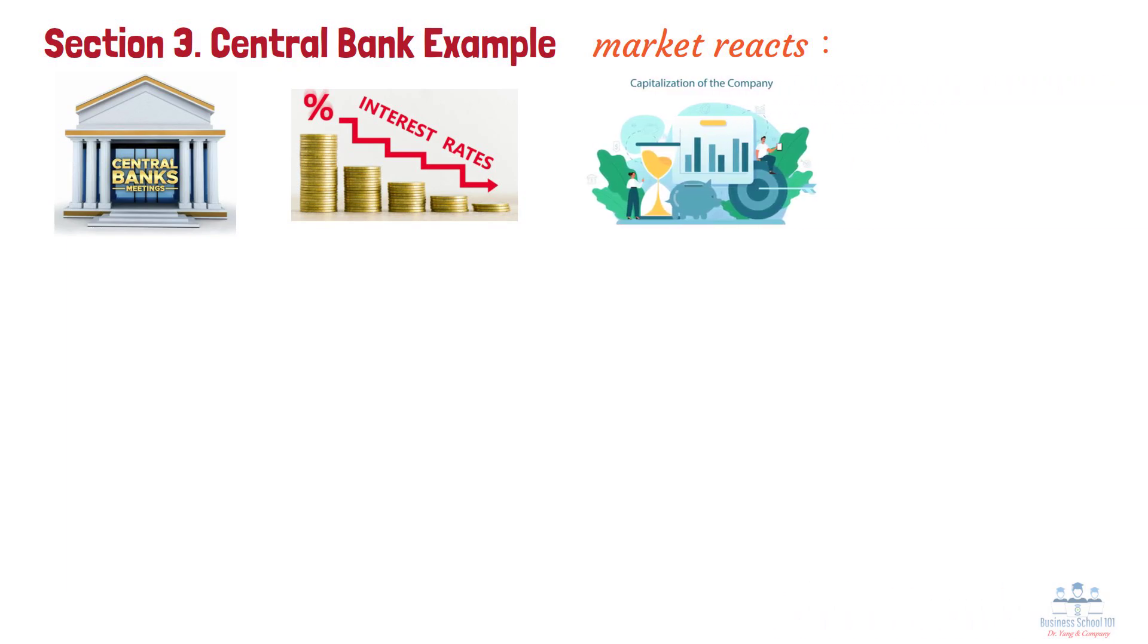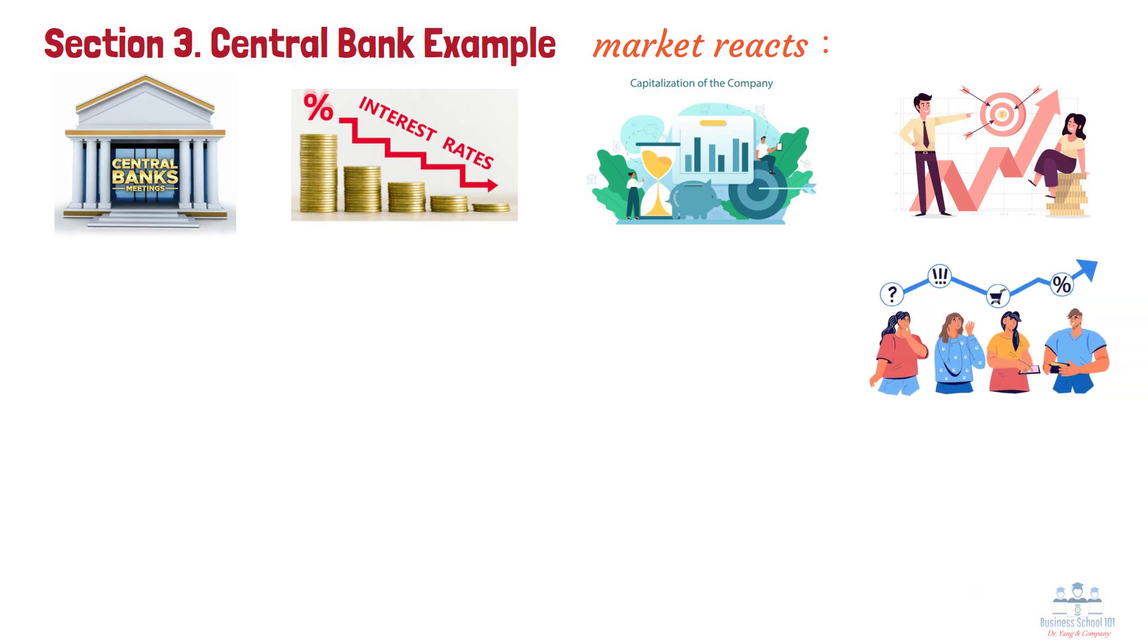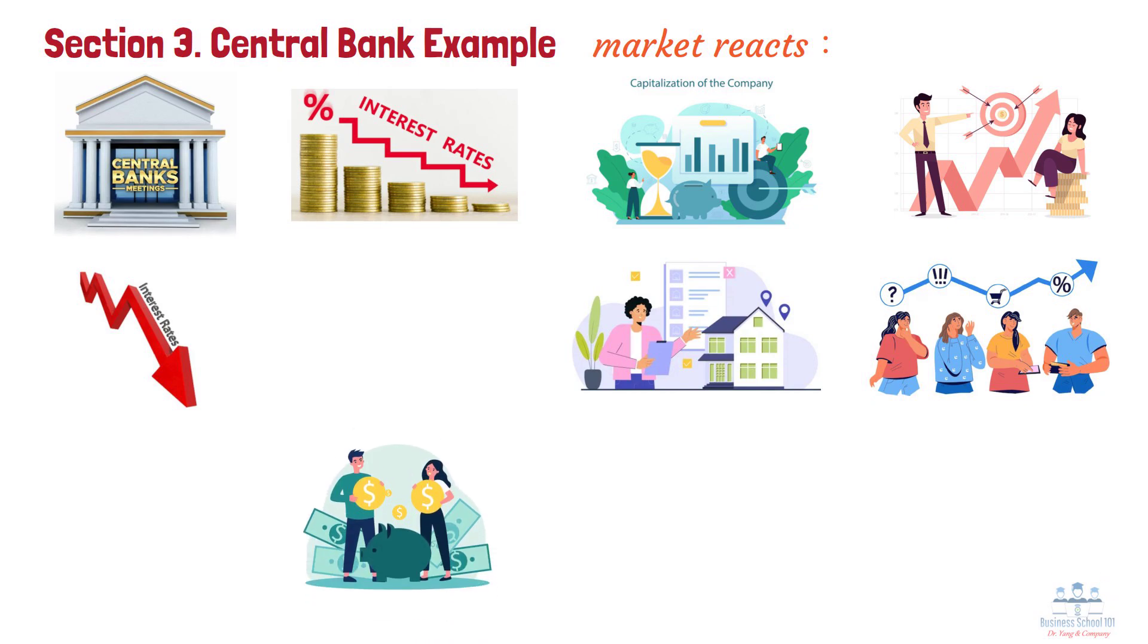Companies might plan new investments in advance, the stock market might rise preemptively, consumers might postpone certain purchase decisions, and real estate developers might adjust their sales strategies. By the time the central bank actually lowers interest rates, the market might have already absorbed this information and presented a completely different state.